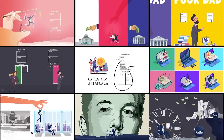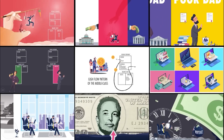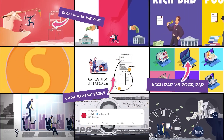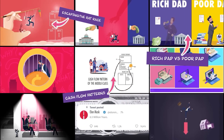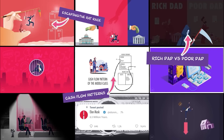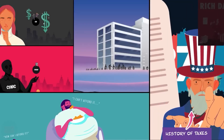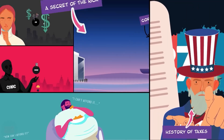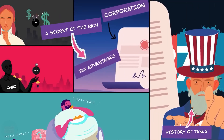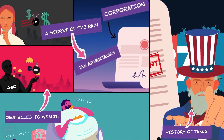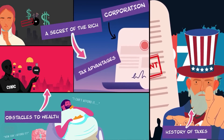In part one of this summary we looked at cash flow cycles, escaping the rat race, the philosophy of Rich Dad vs Poor Dad, and more. In part two we will cover the history of taxes, a secret of the rich, obstacles to wealth, plus much more.